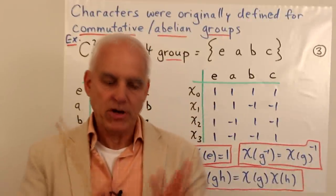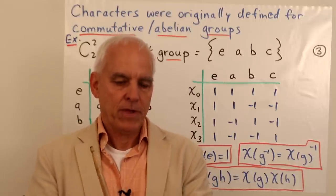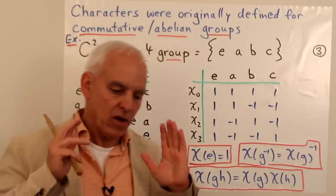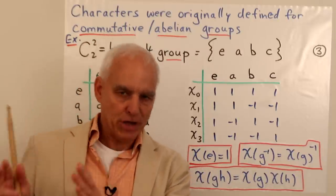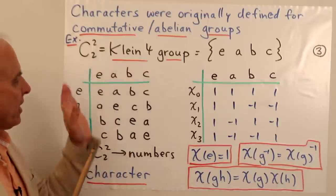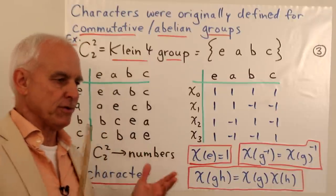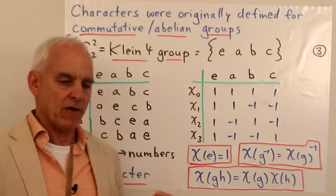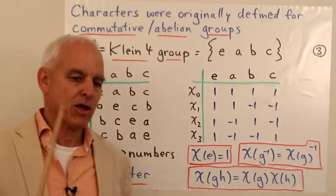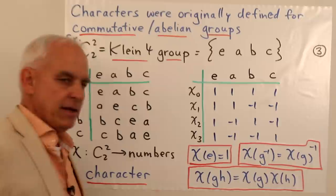The notion of character for a non-commutative group is an extension of a prior notion for commutative or abelian groups, which have vastly simpler representation theory. It's good to start by appreciating characters for abelian groups. Here is a small but significant abelian group, the Klein IV group — sometimes written C2 squared — with four elements e, a, b, c. The group is determined by its multiplication table: a·b = c, a·c = b, b² = e, and the identity times anything is just that thing.